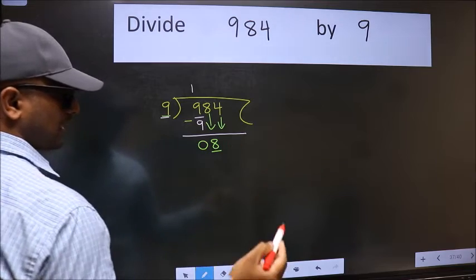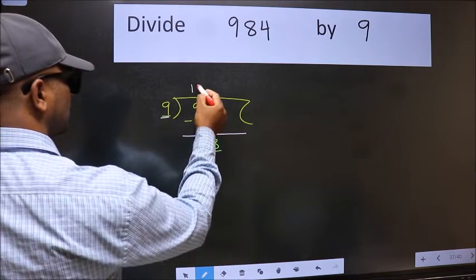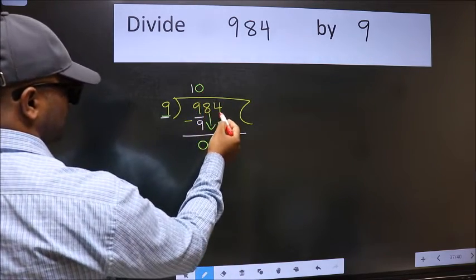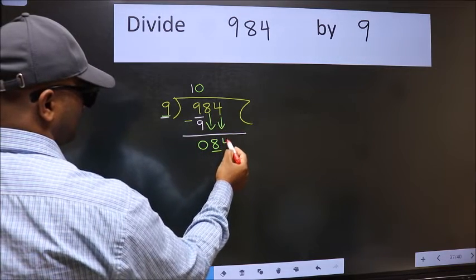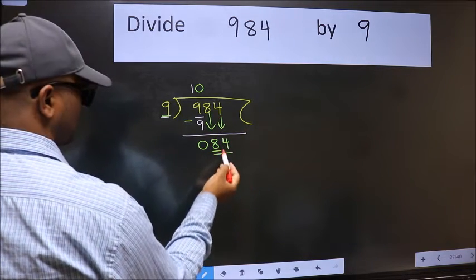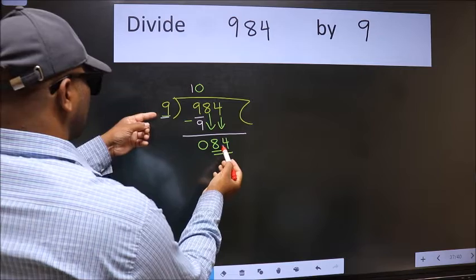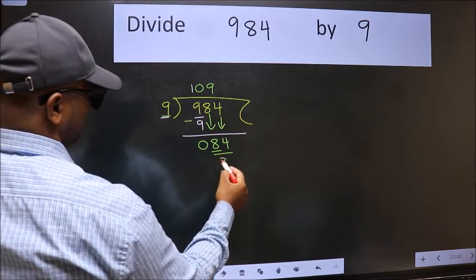And the rule to bring down second number is we should put 0 here. Then only we can bring this number down. Now 84. A number close to 84 in 9 table is 9 nines, 81.